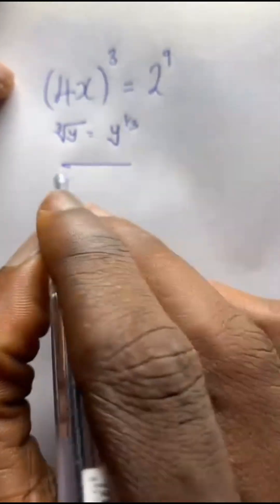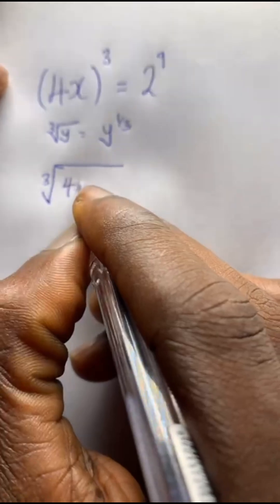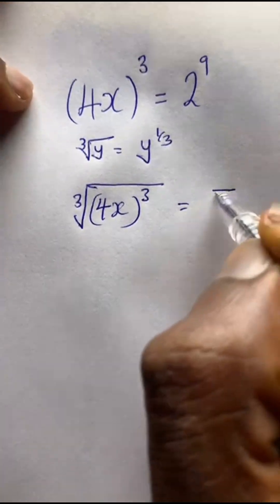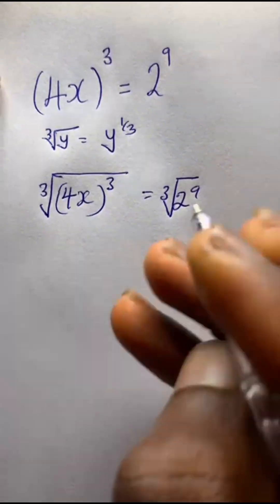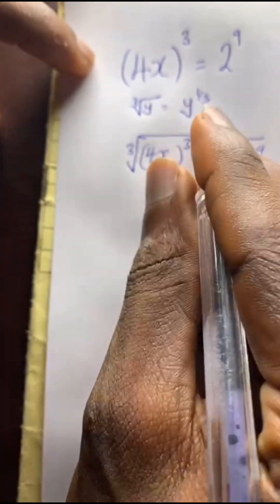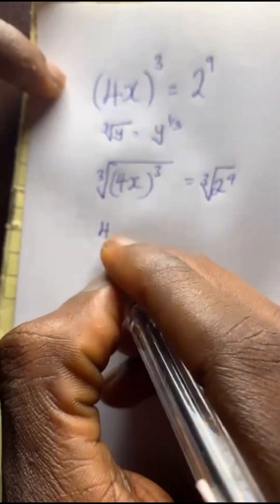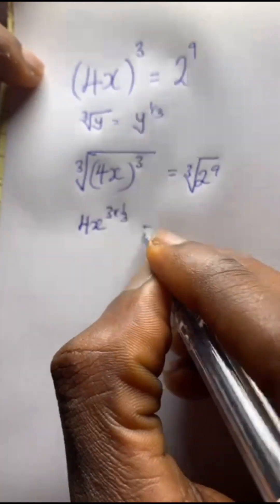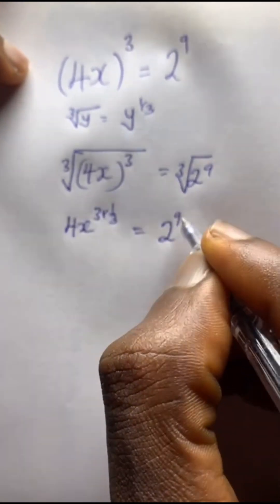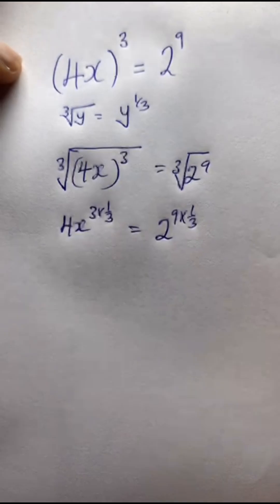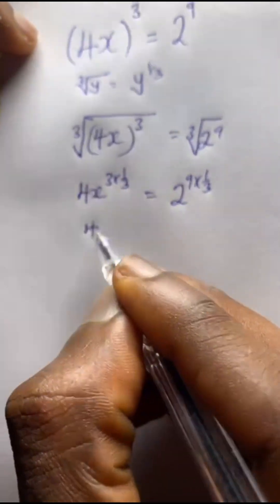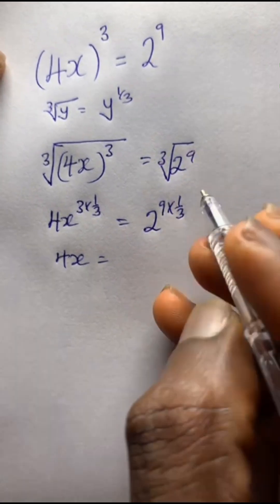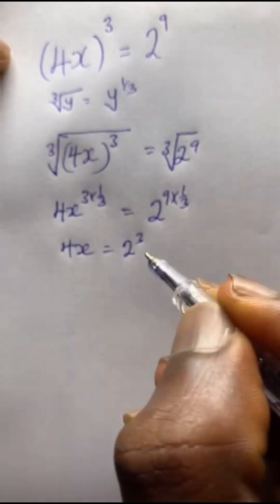Take the cube root of 4x to the power of 3, equals the cube root of 2 to the power of 9. This becomes 4x to the power of 3 times 1 over 3, equals 2 to the power of 9 times 1 over 3. The 3s cancel, leaving 4x equals 2 to the power of 3, since 1/3 of 9 is 3.